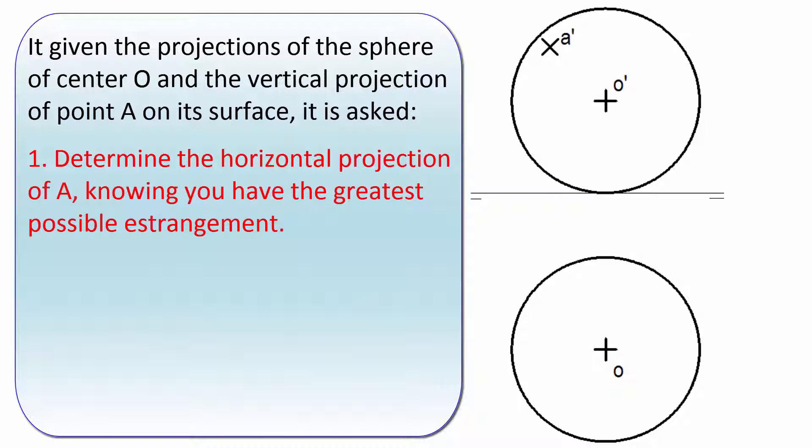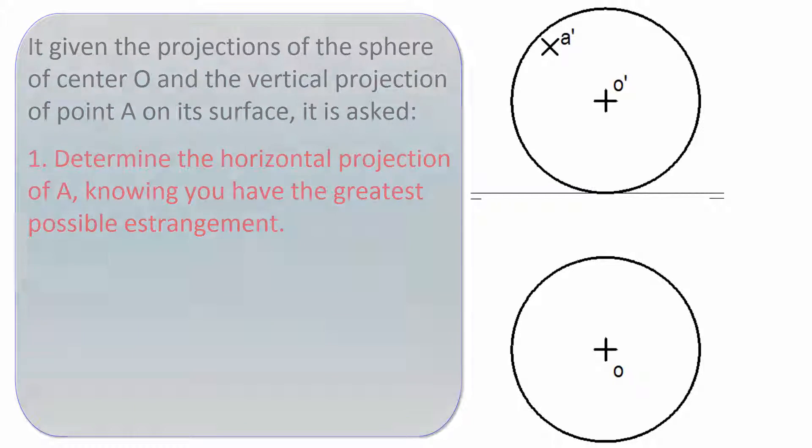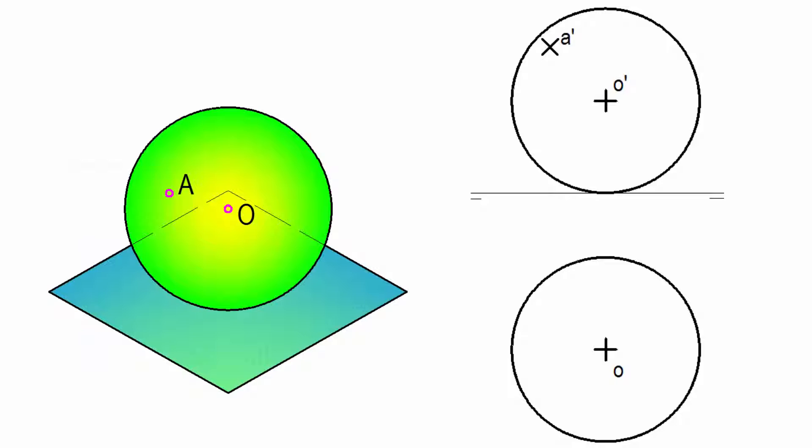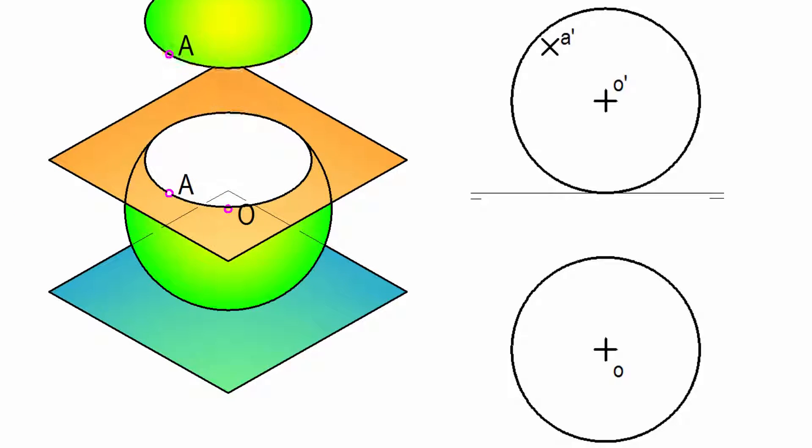We start with the first section. To find the other projection of a point that is on the surface of a sphere we turn to the section that produces a horizontal plane. We draw a parallel to the ground line passing through the vertical projection of the point and another in the horizontal projection of the sphere.